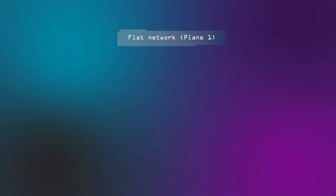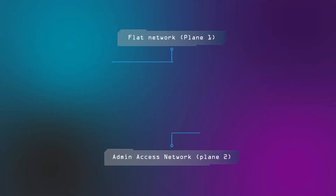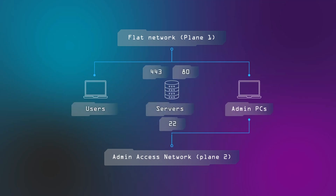So what is the right way to do network segregation if it isn't breaking networks into small zones by way of firewalls? The right way to think of network segregation is in terms of planes — in the simplest case, a data plane and a management plane. Servers can be connected to both planes at the same time, but expose a different set of services to each of them.